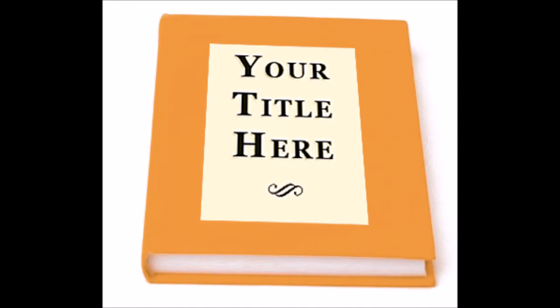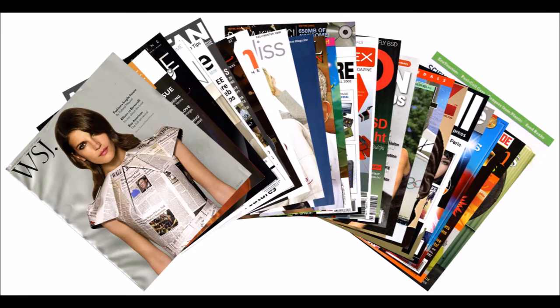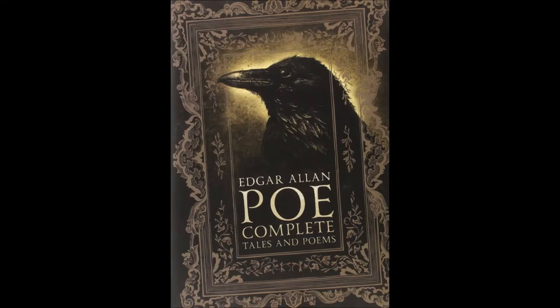The title of source is the name of the article, journal entry, movie, book, etc. For books and movies, you simply write the title in italics like this — The Sound and the Fury, or Mary Poppins. If, however, the title is an article or journal entry, or anything small that is inside of a larger element, like a single short story in a book of short stories, then you write the title in quotes. So if you have a book of Edgar Allan Poe stories and you're citing just one story, then you would write the title of the story like this: "The Cask of Amontillado."